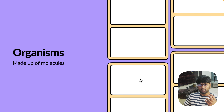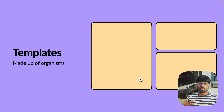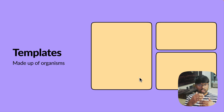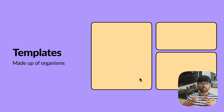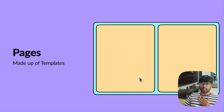Templates are made up of a group of organisms. If you consider a SaaS dashboard, it contains a side navigation bar, which is an organism, and a top nav bar, which is also an organism. The dashboard content — graphs, tables, and all that — also consists of organisms. Grouping all of them together is called a template.